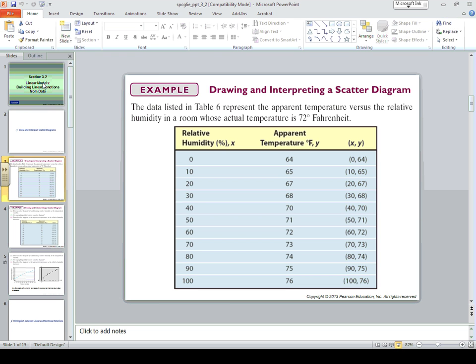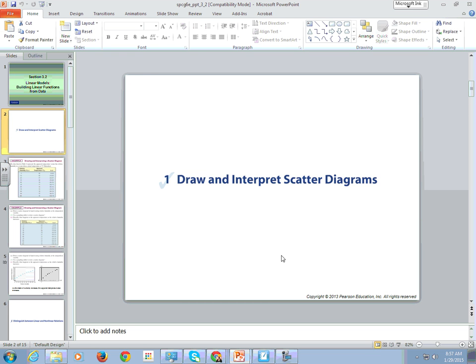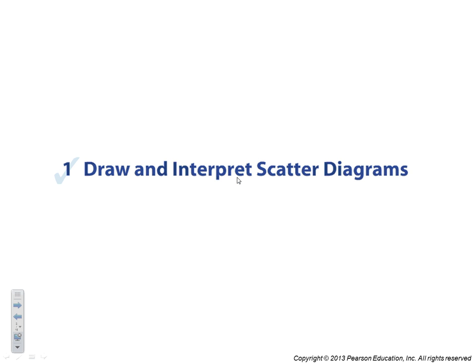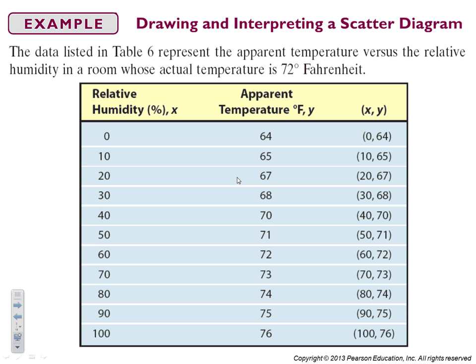Okay, draw and interpret scatter diagrams. The data listed in table six represents the apparent temperature versus the relative humidity in a room whose actual temperature is 72 degrees Fahrenheit. So we got humidity and we got temperature.